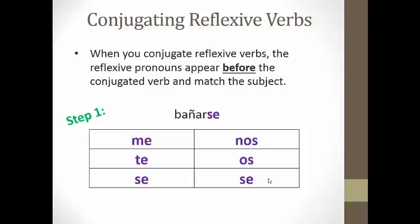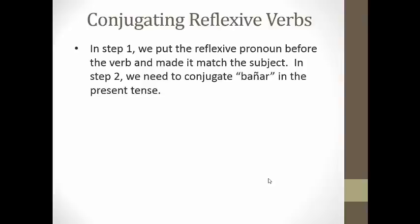So step two to conjugating a reflexive verb: in step two, you need to go ahead and conjugate the verb as you normally would. In this example, we're going to conjugate BAÑAR in the present tense. It's an AR verb, so it's going to have AR present tense endings. Remember the song that goes: O, AS, A, AMOS, AS, AN.